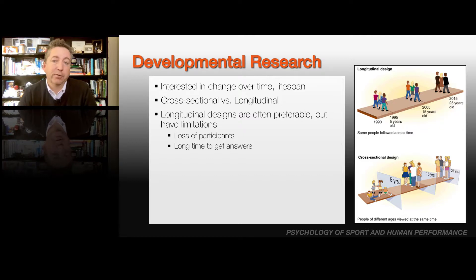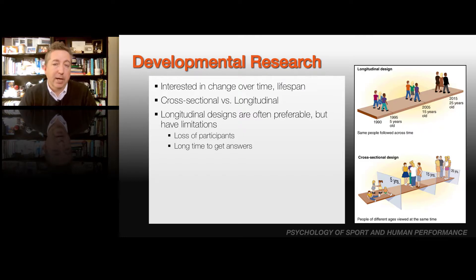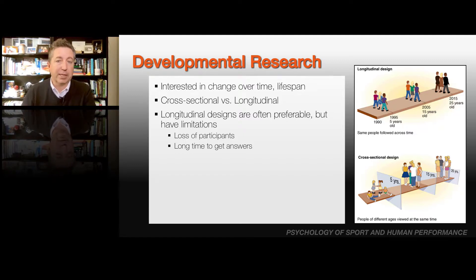We might be interested in changes over time in some studies — this is what we refer to as developmental research designs. We might be interested in changes over a short period of time or even over the lifespan. These can be broken down into cross-sectional versus longitudinal. In cross-sectional designs, you try to find people right now who represent different time cohorts — for example, different age groups grouped together to look at changes over time.